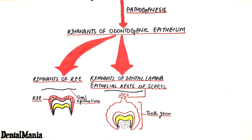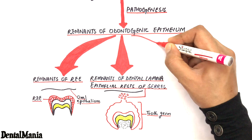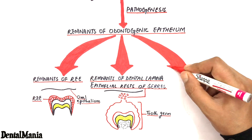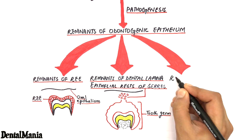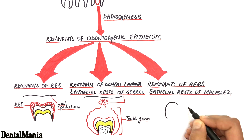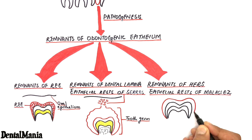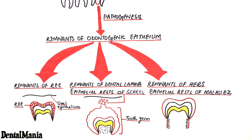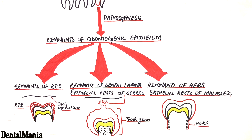And remnants of Hertwig's epithelial root sheath, also called epithelial rests of Malassez, left after the root of a tooth is formed. Hence, these are the three types of odontogenic epithelial remnants which, when stimulated, result in the formation of a cyst.